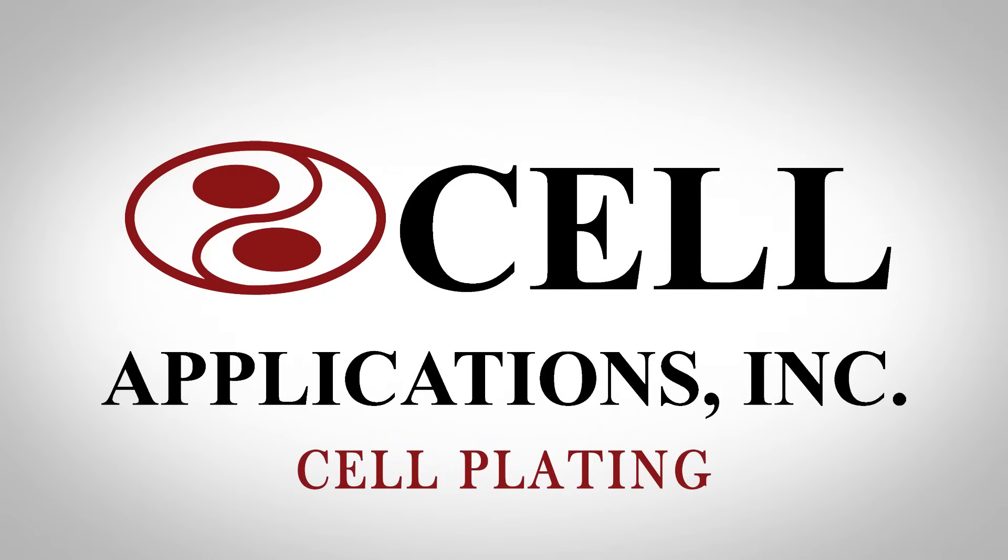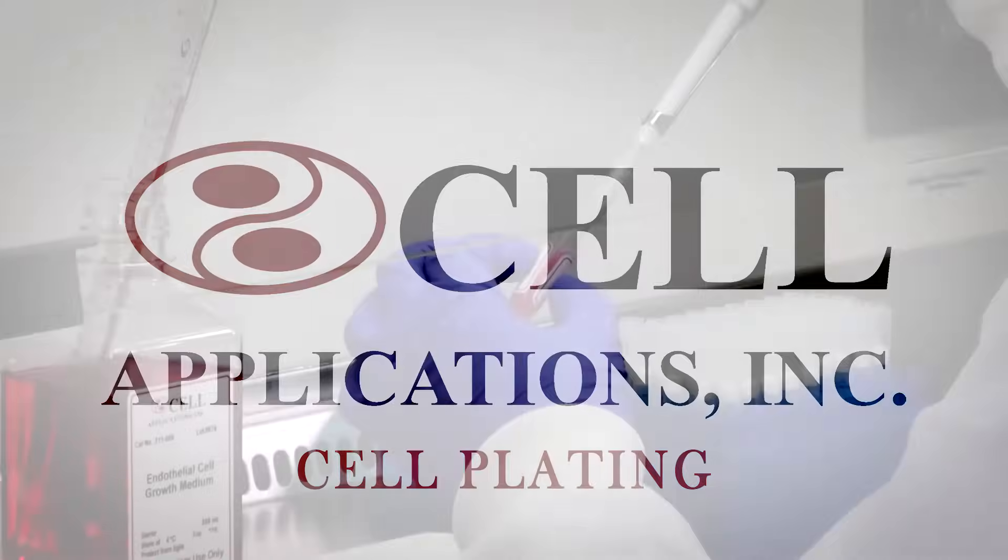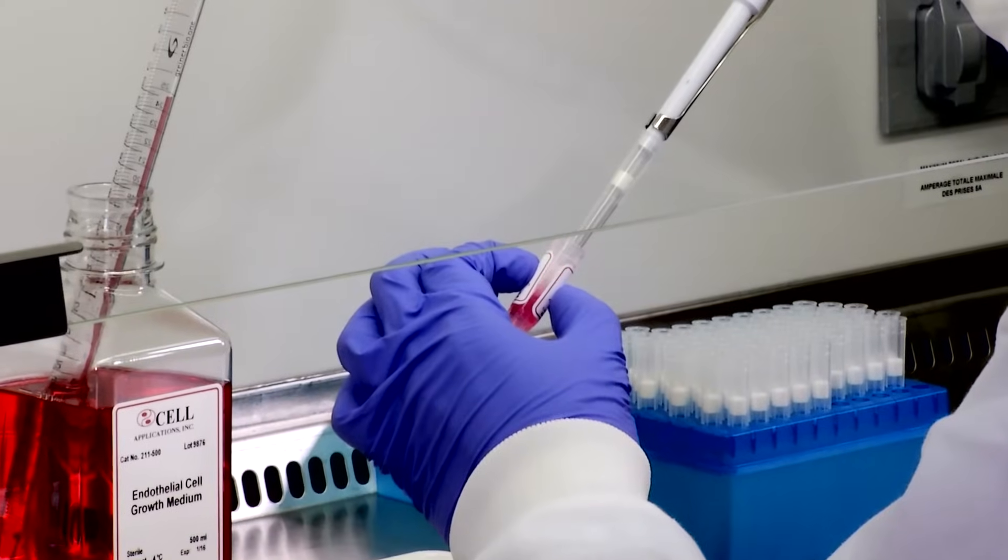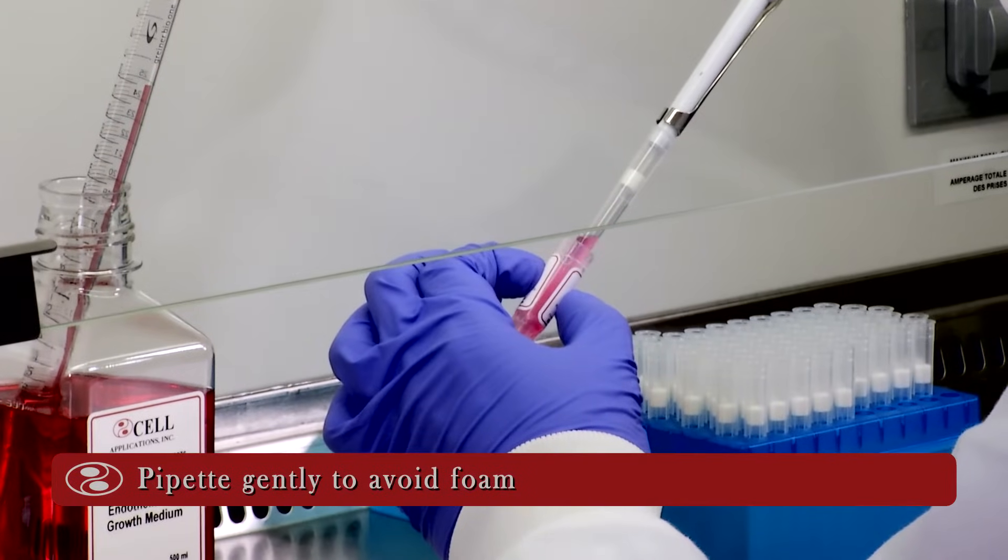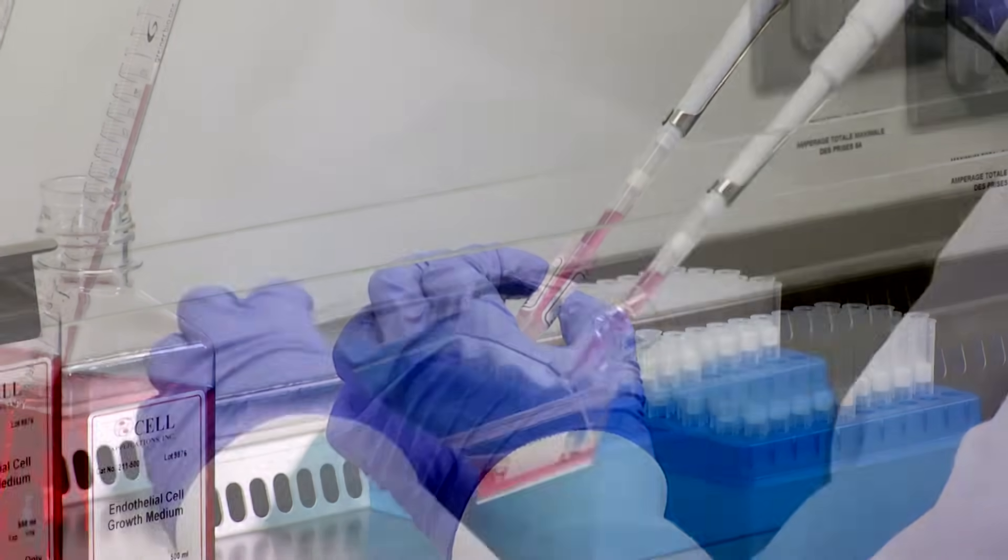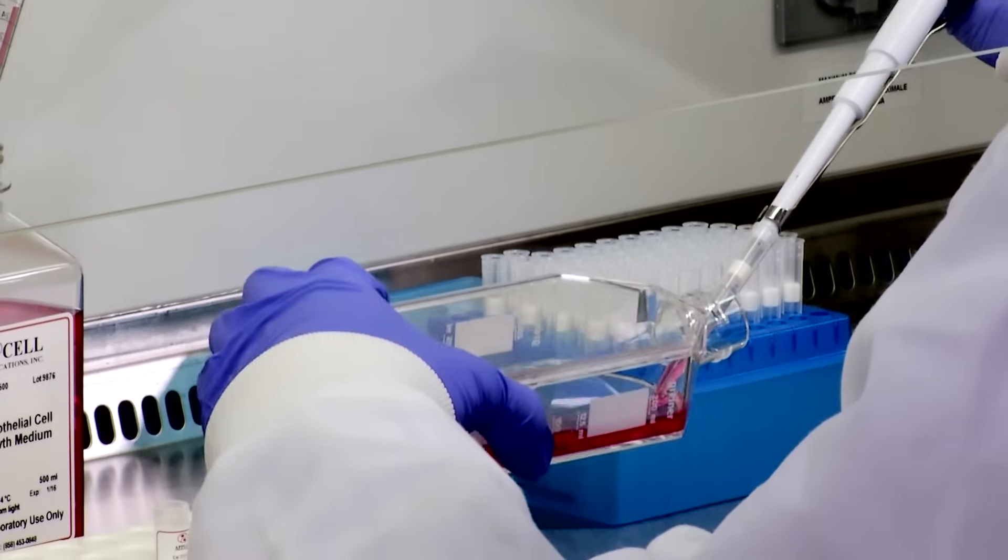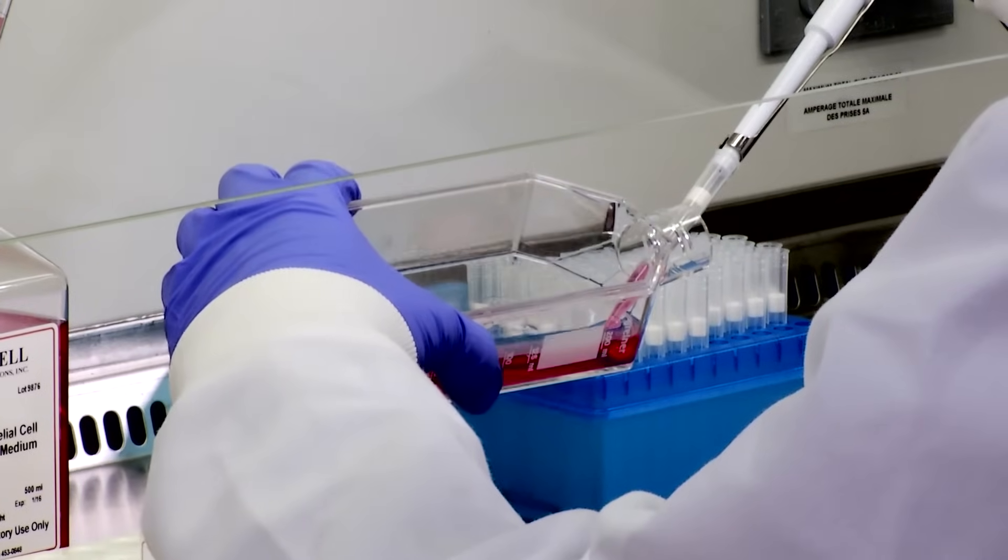Cell plating. Re-suspend cells three times with 1 ml pipet. Pipet gently to avoid foam. Transfer cells to T75 flask containing 15 ml growth medium.